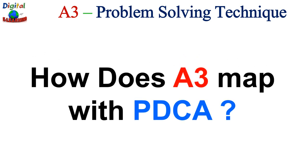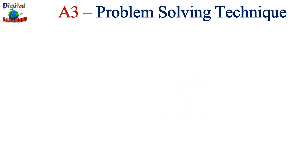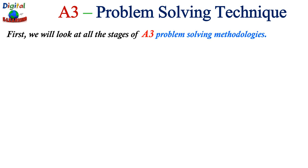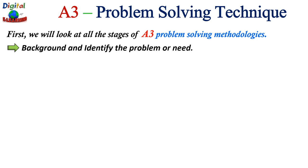The first step in A3 problem solving is background and identifying the problem — selecting an issue you want to resolve and stating how that issue impacts your business, your customer, your process, and your bottom line. Next, the team should break down and further define the problem using the 5W1H technique: what, when, where, who, why, and how.